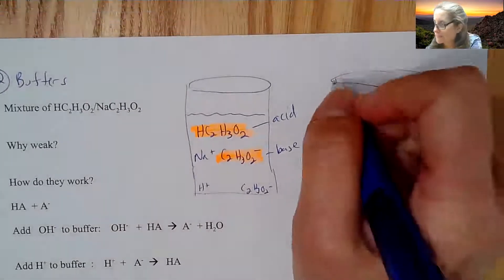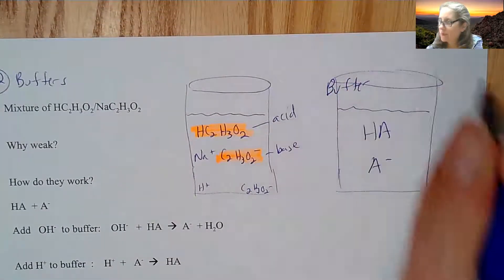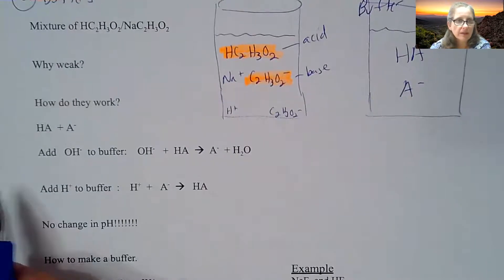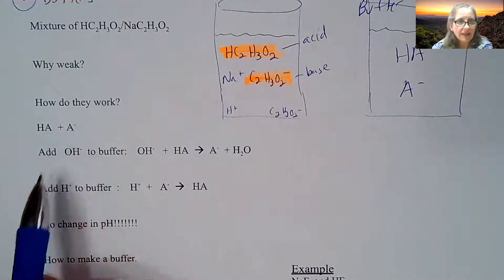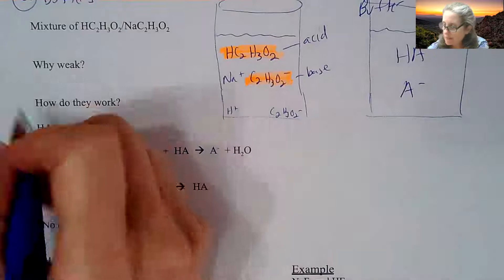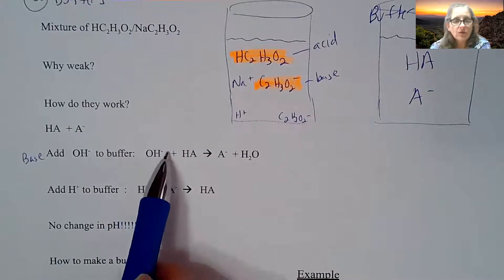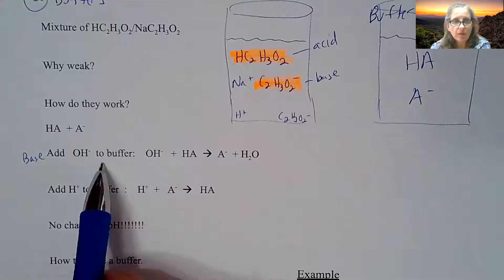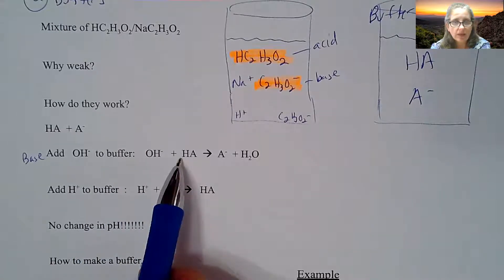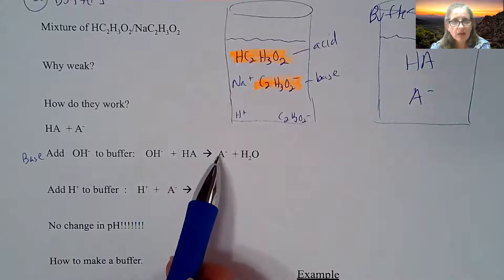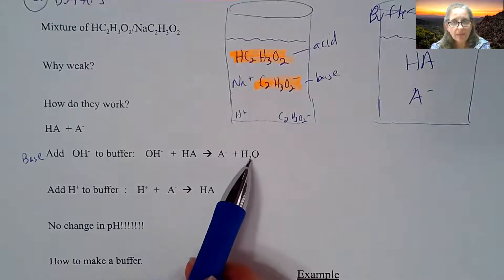If we have this buffer here where I have both acidic and basic components in there, HA and A-, the interesting thing is if I'm adding a base to a buffer, that OH that is introduced to that buffer is then going to react with the acid part and you're going to produce more anion plus water.